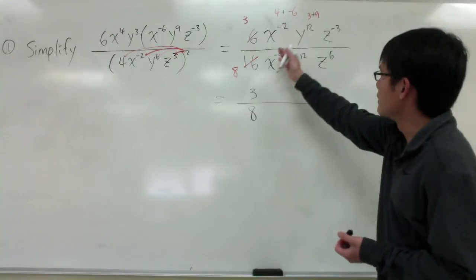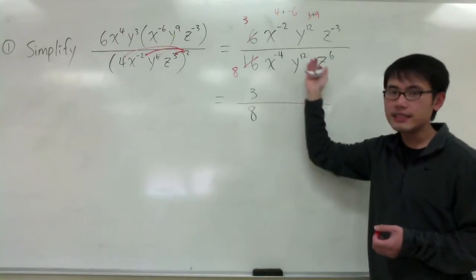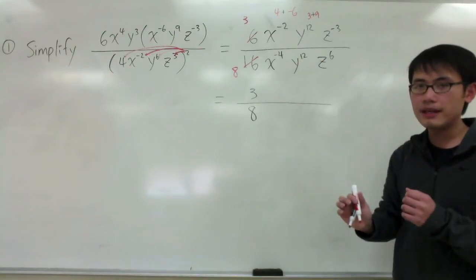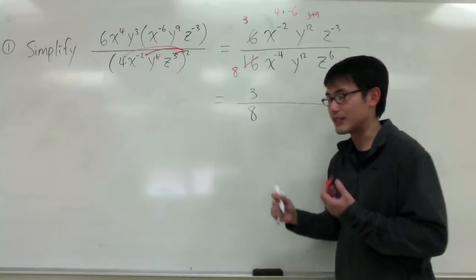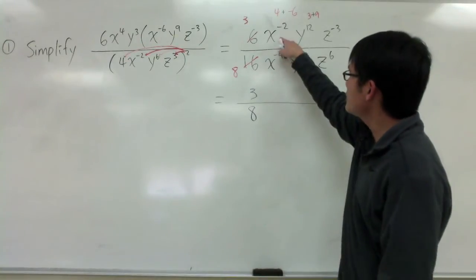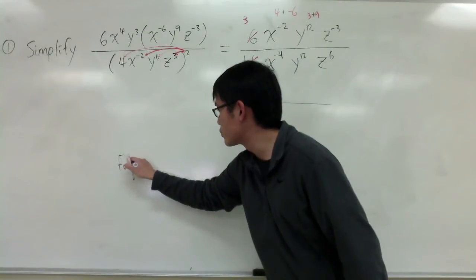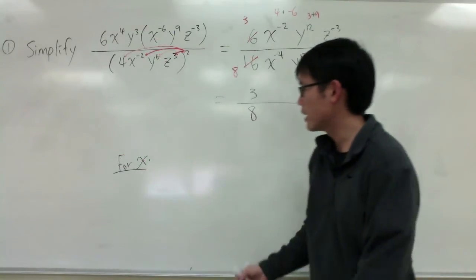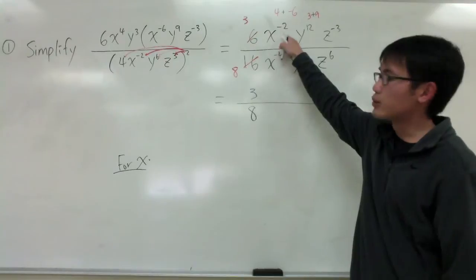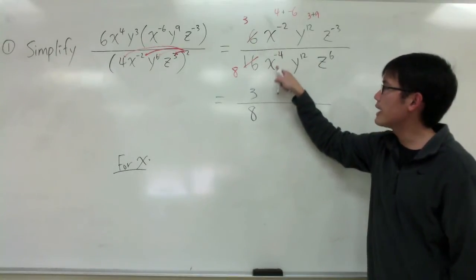Then, for the variables, when I divide the variables, if they have the same base, I just need to subtract the exponents. Let's look at x. I will write it down like this. Let me do this one for x. I'm looking at x to the negative 2 over x to the negative 4.